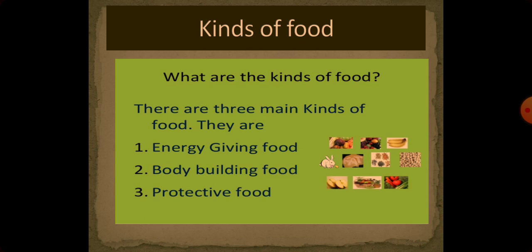Now let's start with the different kinds of food. Mostly, there are three kinds of food. Number one: energy giving food. Number two: body building food. Number three: protective food.